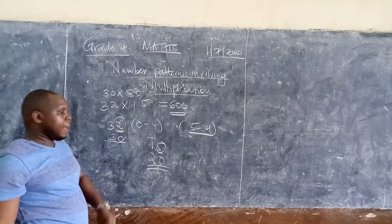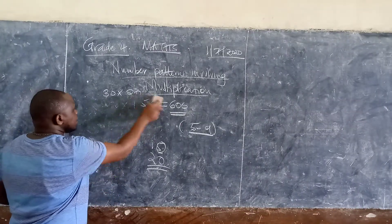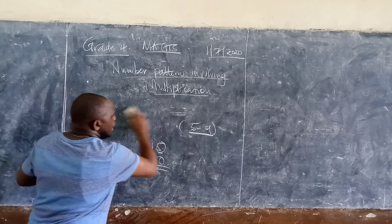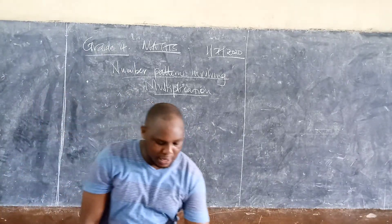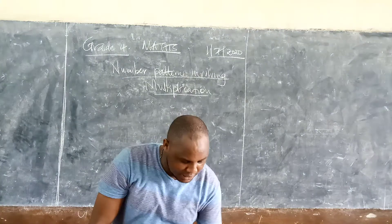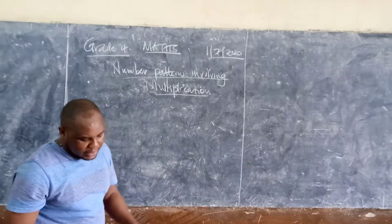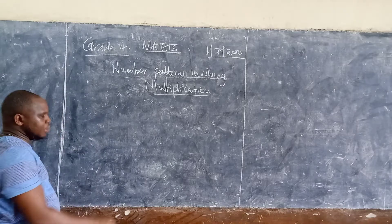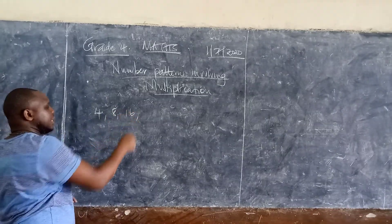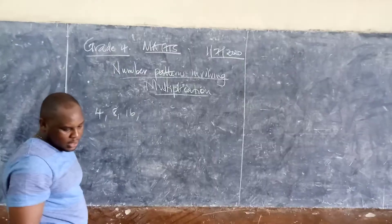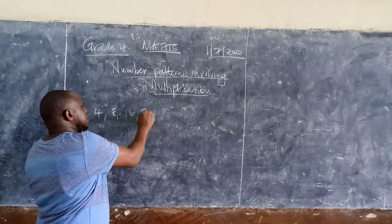That is the multiplication by estimating, rounding off to the nearest ten. Now today we want to look into number patterns. And I will give you examples of number patterns. Like for example, you can have a number pattern like four, eight, sixteen, and twenty.